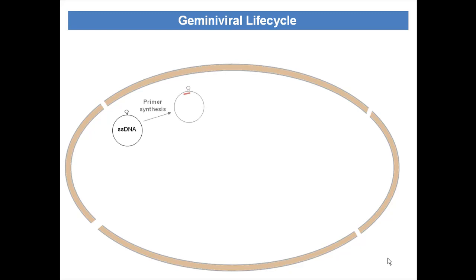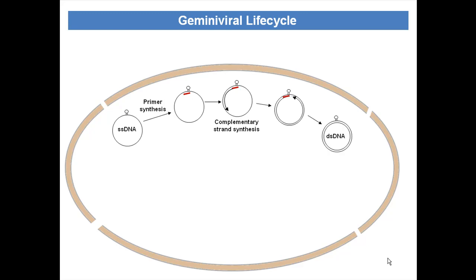After entering the nucleus, the complementary strand is synthesized first by the primer synthesis, followed by the complementary strand synthesis. Once the double-stranded DNA is formed, it is bidirectionally transcribed and these transcripts then enter the cytoplasm of the cell for translation.